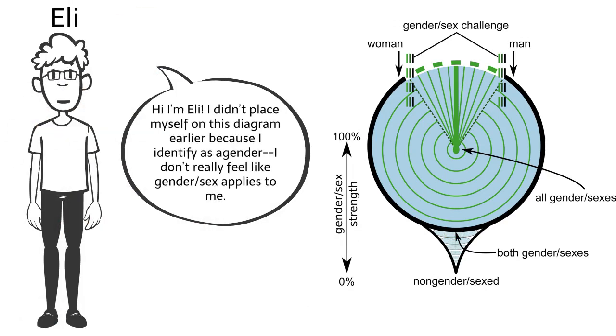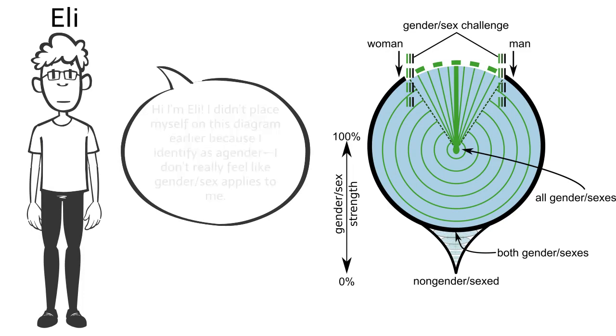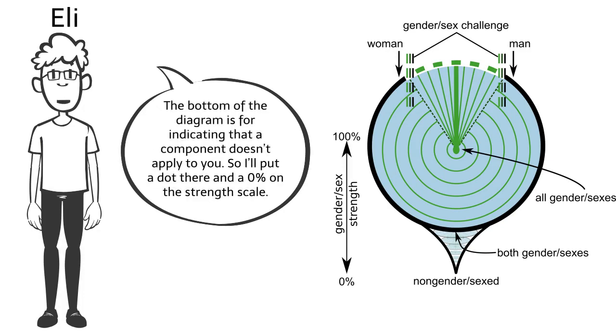Hi, I'm Eli. I didn't place myself on this diagram earlier because I identify as agender. I don't really feel like gender sex applies to me. The bottom of the diagram is for indicating that a component doesn't apply to you. So I'll put a dot there and a 0% on the strength scale.